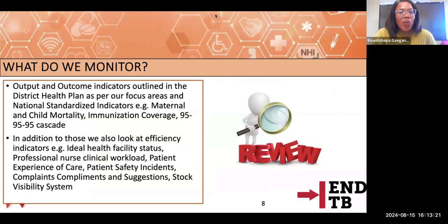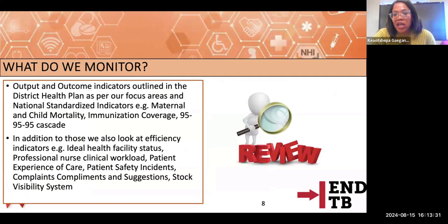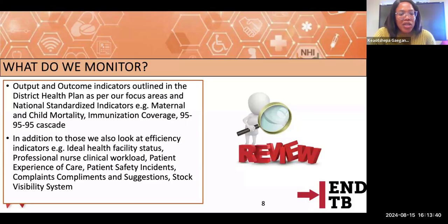What we monitor includes output and outcome indicators outlined in our district health plan as priority focus areas, as well as national standardized indicators covering maternal health, child mortality, and immunization coverage. We also monitor efficiency indicators such as professional nurse clinical workload, patient experience of care, PSIs, and stock visibility system.